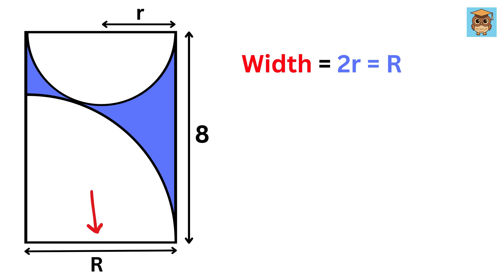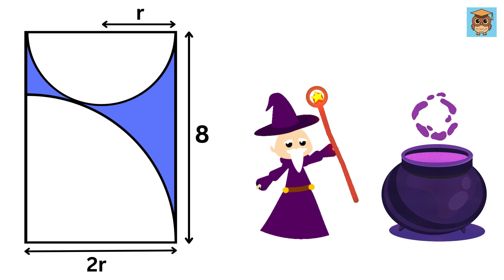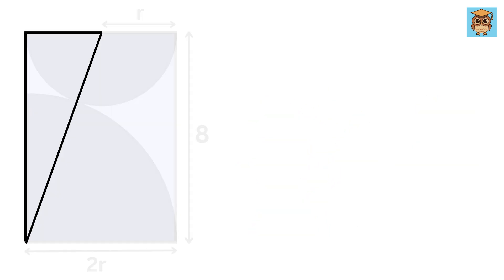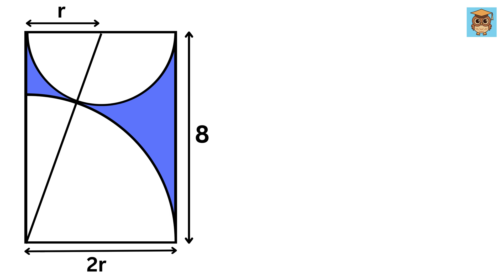Now we can simply remove this big R and replace it with 2 small r. Now here comes the magic. Consider this right triangle. This side is same as r and the hypotenuse will be same as this which is r plus this which is the same as 2r or 3r. And this is 8.